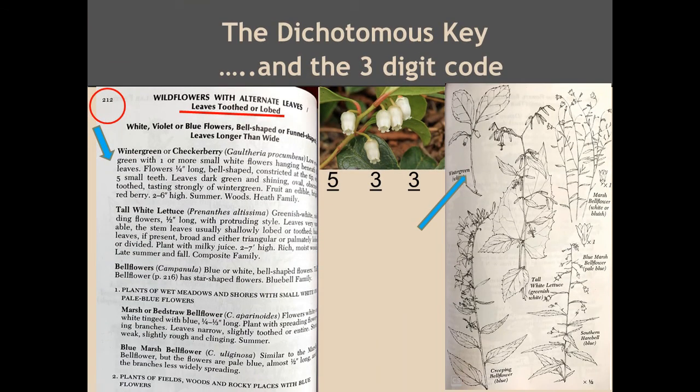On page 212, you'll see that the leaves are toothed and lobed, and there is a description of wintergreen or checkerberry. You can read the description to make sure it fits, and also on the opposite page you'll see a sketch showing the wintergreen flower.